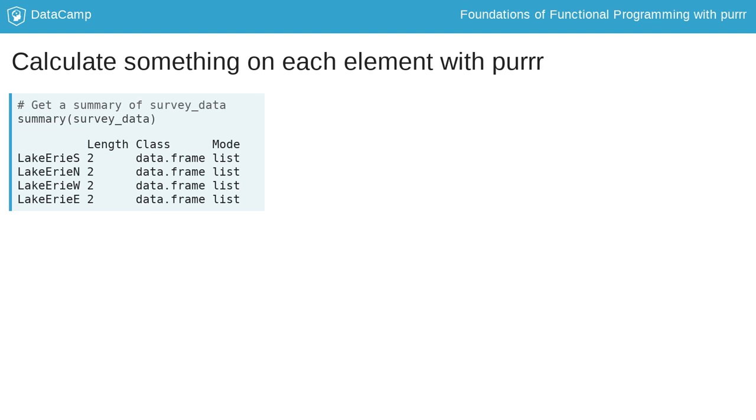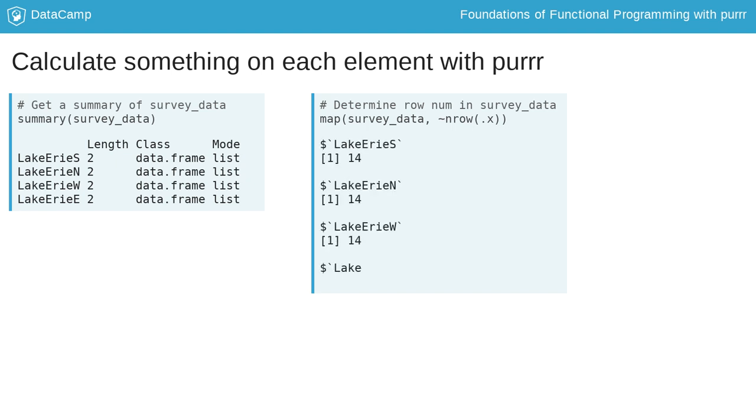The map function takes two arguments. The first argument is the list object, in this case the survey_data list. The second argument is the function we want to iterate each element through, in this case the nRow function. We put the function after the tilde symbol. Then we put the dot x into the function to show map where we want to put the element to be inputted.